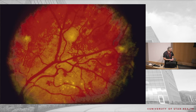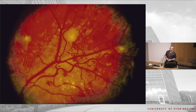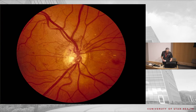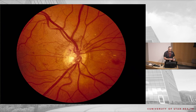Here we see hemorrhages, cotton wool spots, and also neovascularization. There's neovascularization of the disc (NVD) and neovascularization elsewhere (NVE) — the term for neovascularization in the other 90% of the retina. NVD has a 'medusa's look,' like snakes coming out of the optic nerve head — all those dilated vessels in the optic nerve head.